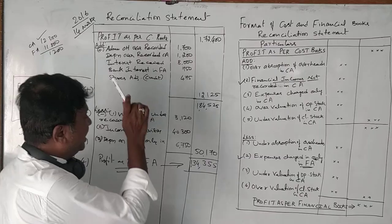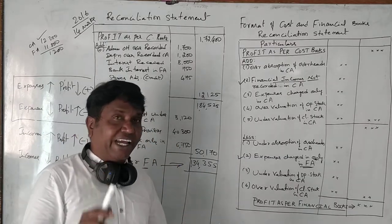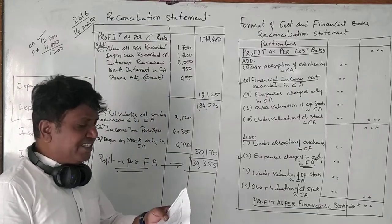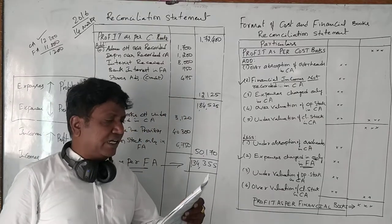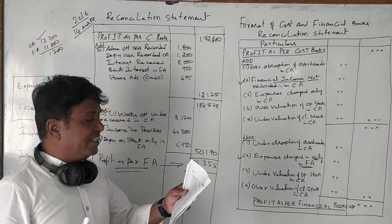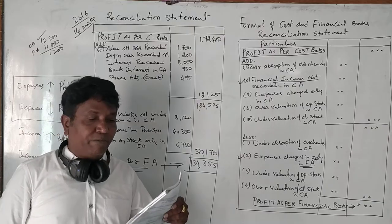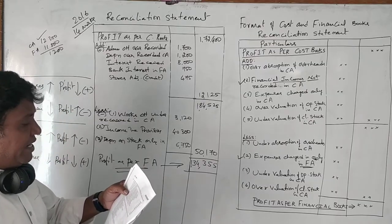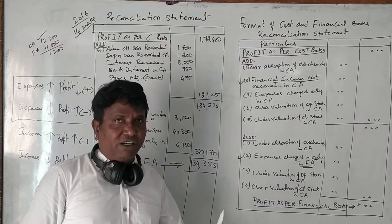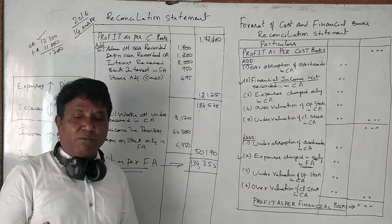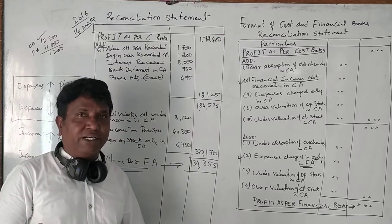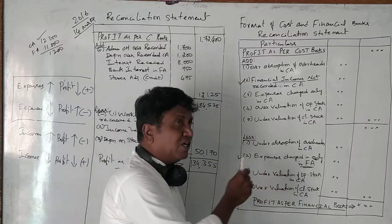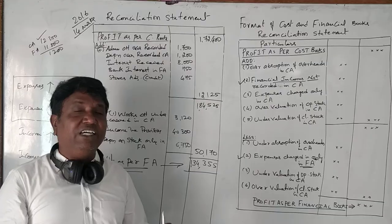Stores adjustment — credit income, add money. This item size: depreciation of stock charged in financial accounting is income. Tax provided in financial accounting — income tax provision is a financial accounting expense, not included in cost accounting.